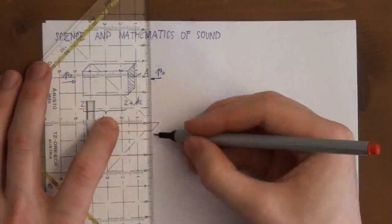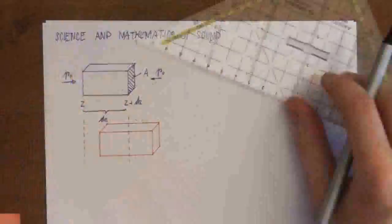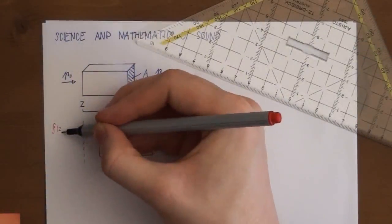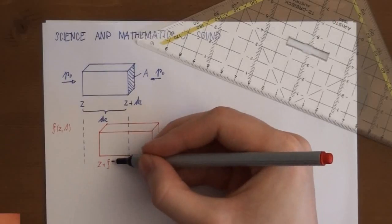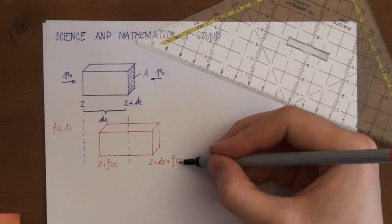To measure this displacement we use the function Zeta of Z and T. Consequently the new ends of the section are located at Z plus Zeta of Z and Z plus DZ plus Zeta of Z plus DZ.